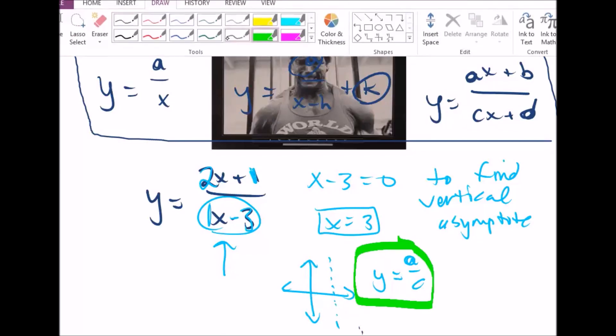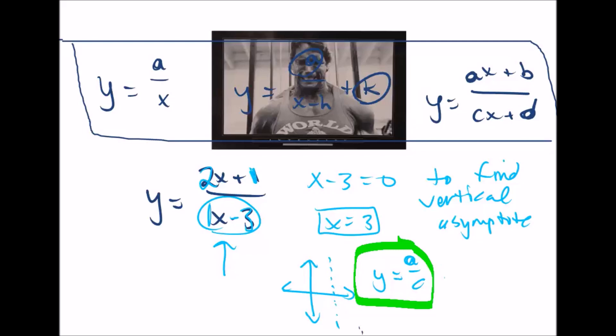To find the new horizontal asymptote, it's y equals a divided by c, which is 2 divided by c is 1. So 2. So we know there's a horizontal asymptote here at y equals 2.